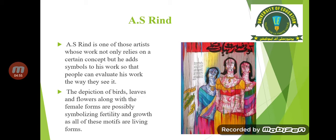The depiction of birds, leaves, and flowers along with the female forms are possibly symbolizing fertility and growth, as all of these motifs are living forms. The Urdu text specifically has not been used in a purely symbolic or purely conceptual way. But we are looking at the female forms, leaves, flowers, and different birds — all of these elements are conceptually added because they are living beings and they represent growth and fertility. That's why the artist has added these motifs in his paintings, especially alongside figures.